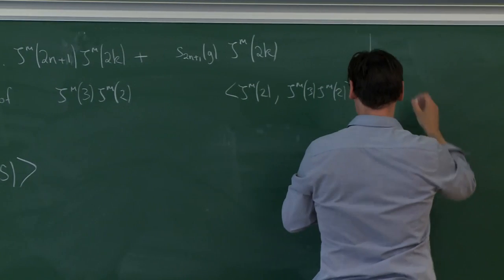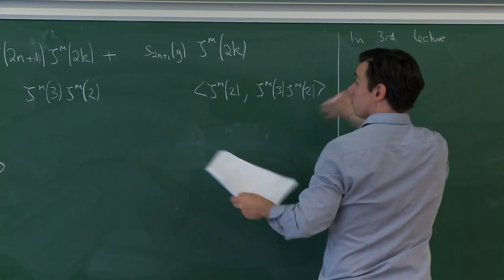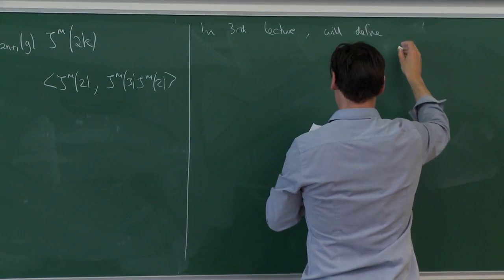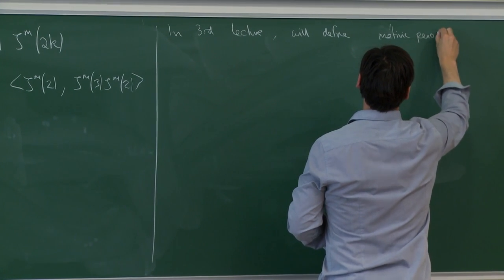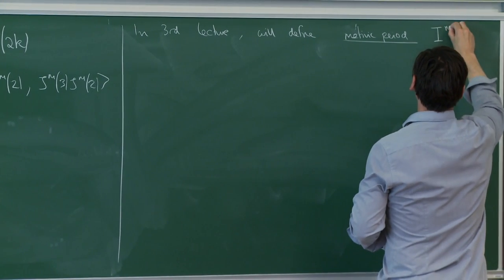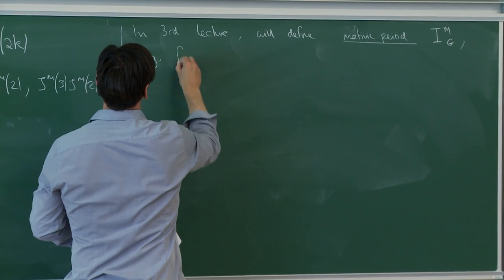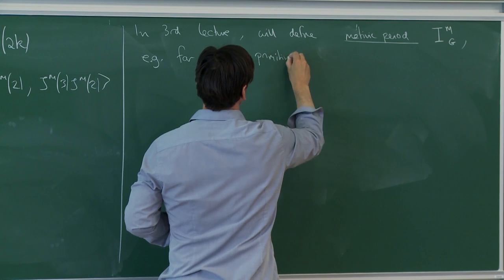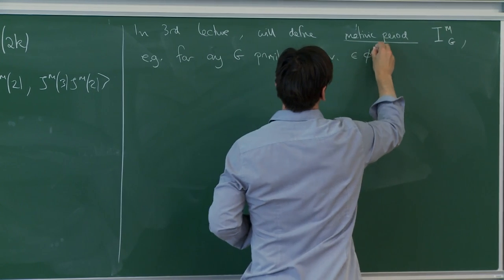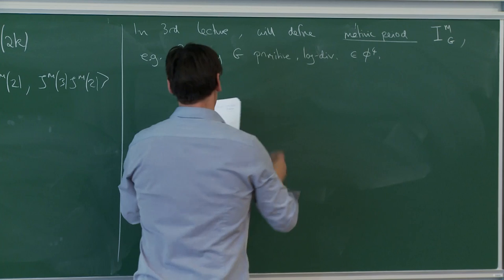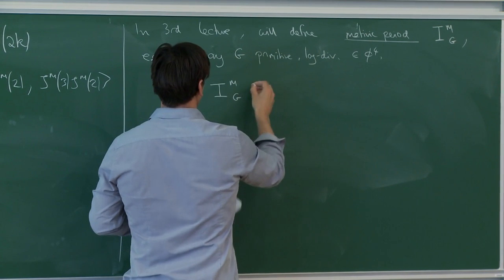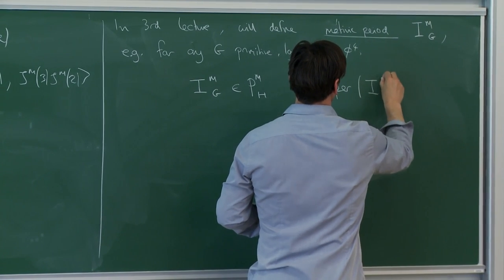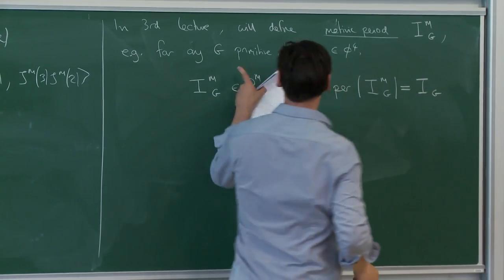So in the second lecture I will set all this up rigorously, and in the third lecture I will define a motivic period I^m_G — in particular for any graph G of the type we're looking at here, so primitive, overall log-divergent in phi-4 — but it will be much more general. We'll get an element I^m_G in this same ring such that its period is the Feynman amplitude we want, which by these assumptions converges.